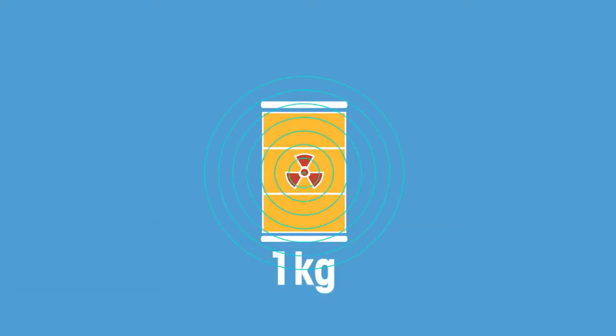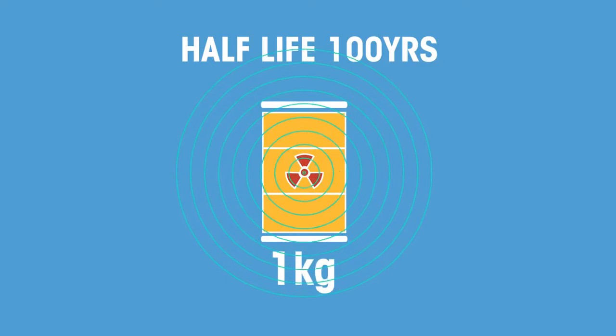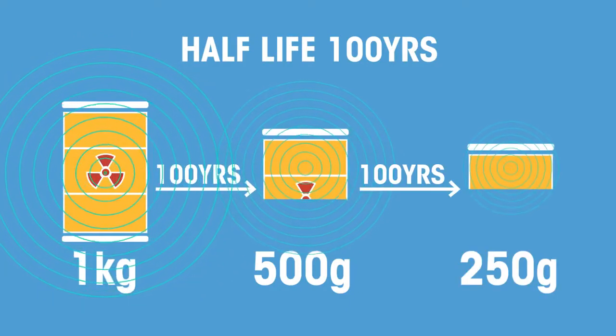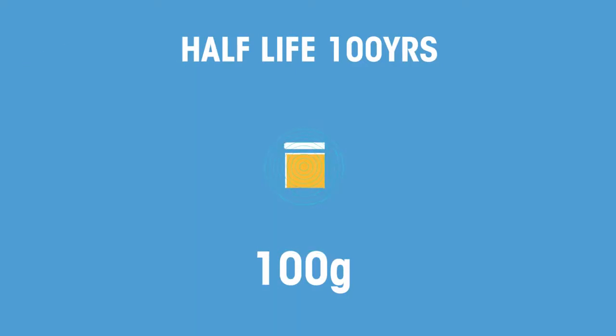If we start off with a kilogram of radioactive waste that has a half-life of 100 years, after 100 years we will have 500 grams of radioactive waste. After another 100 years there will be 250 grams of it, and so on. Eventually, the amount of radiation will decrease until it reaches the same level as background radiation.